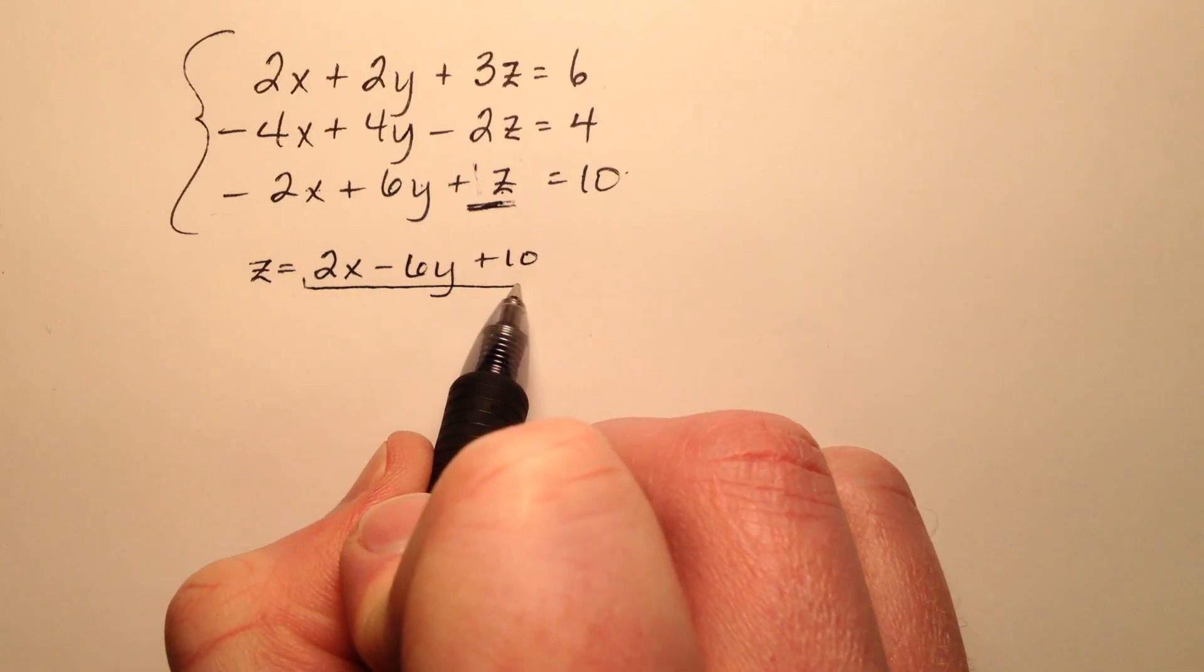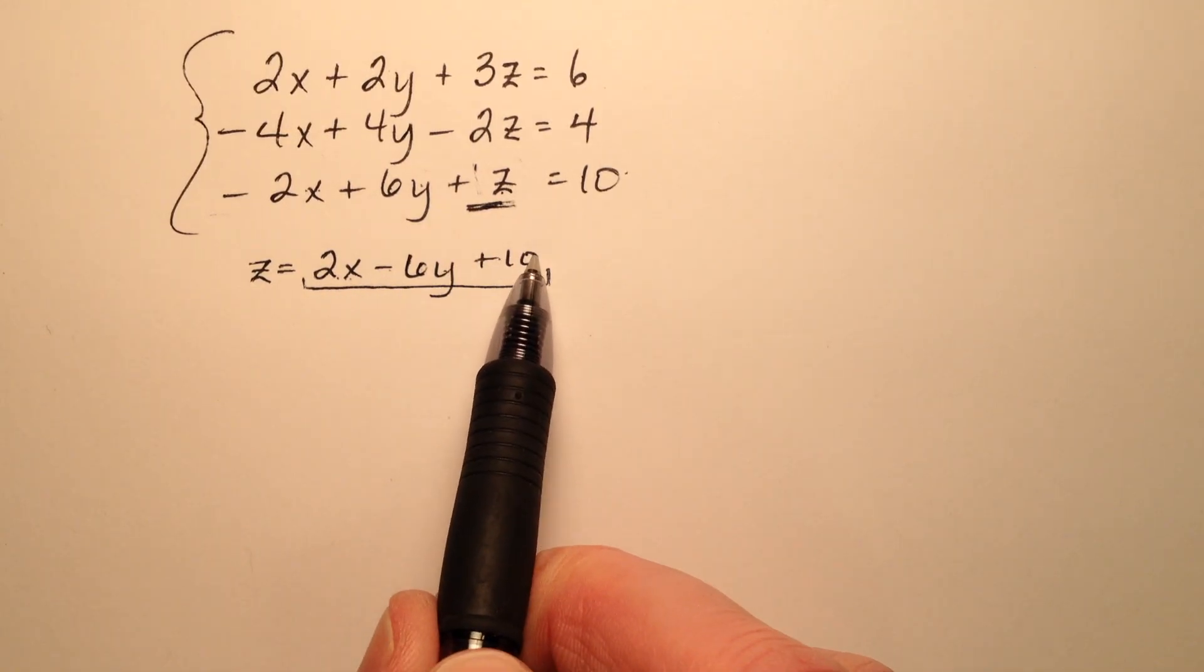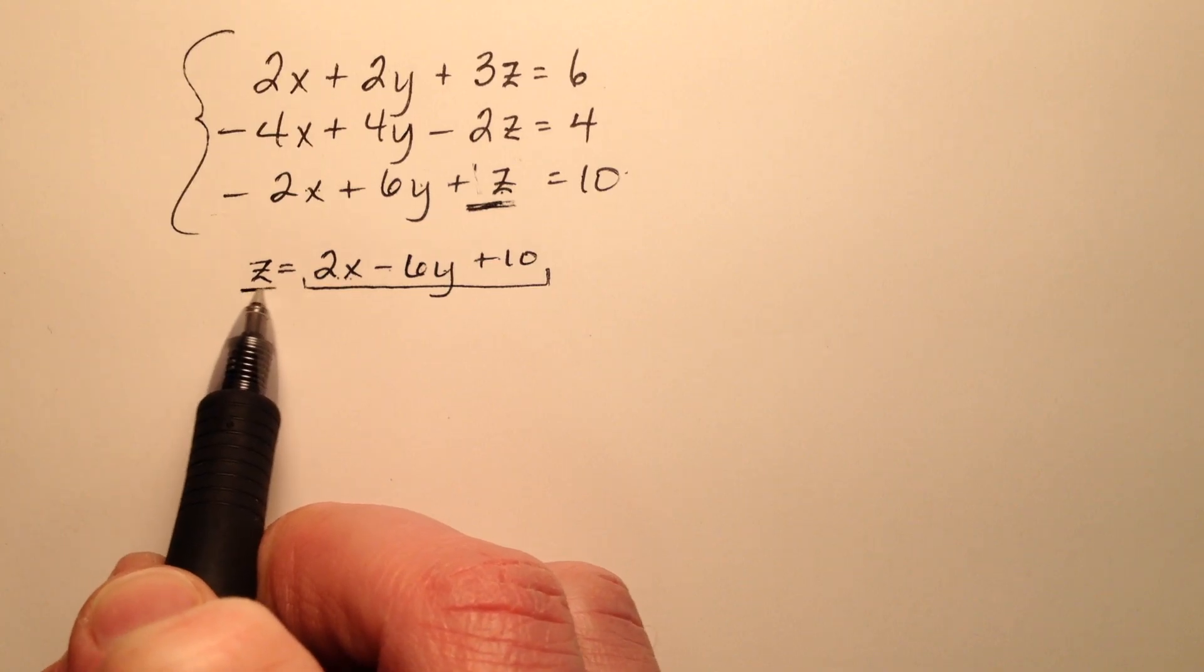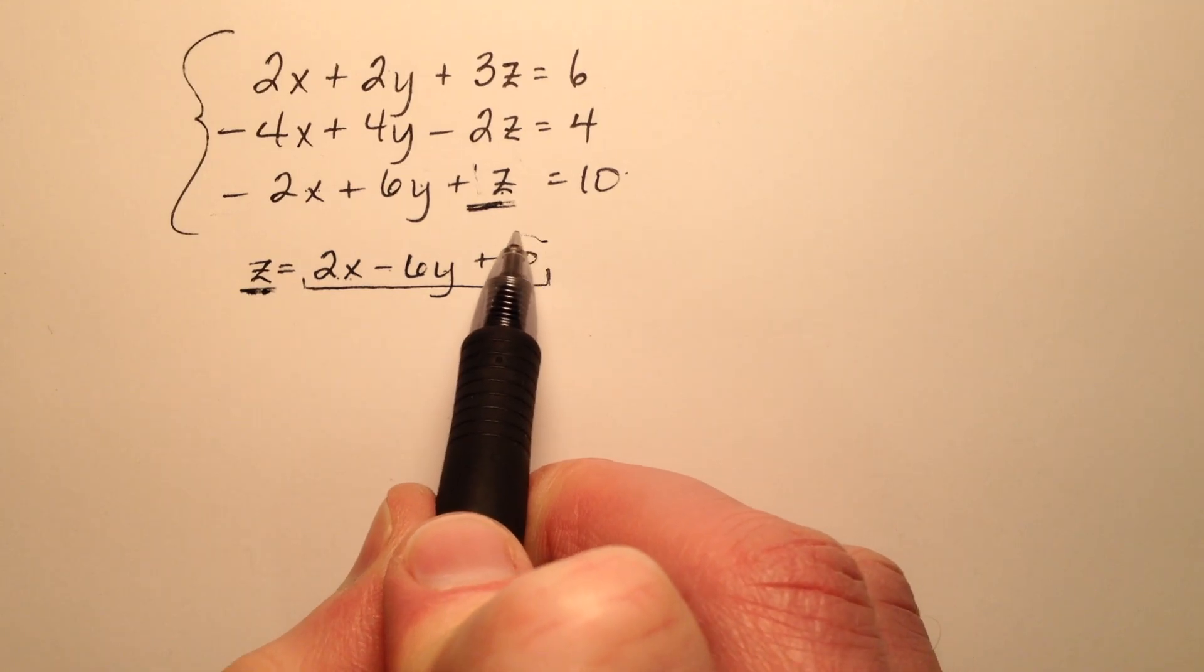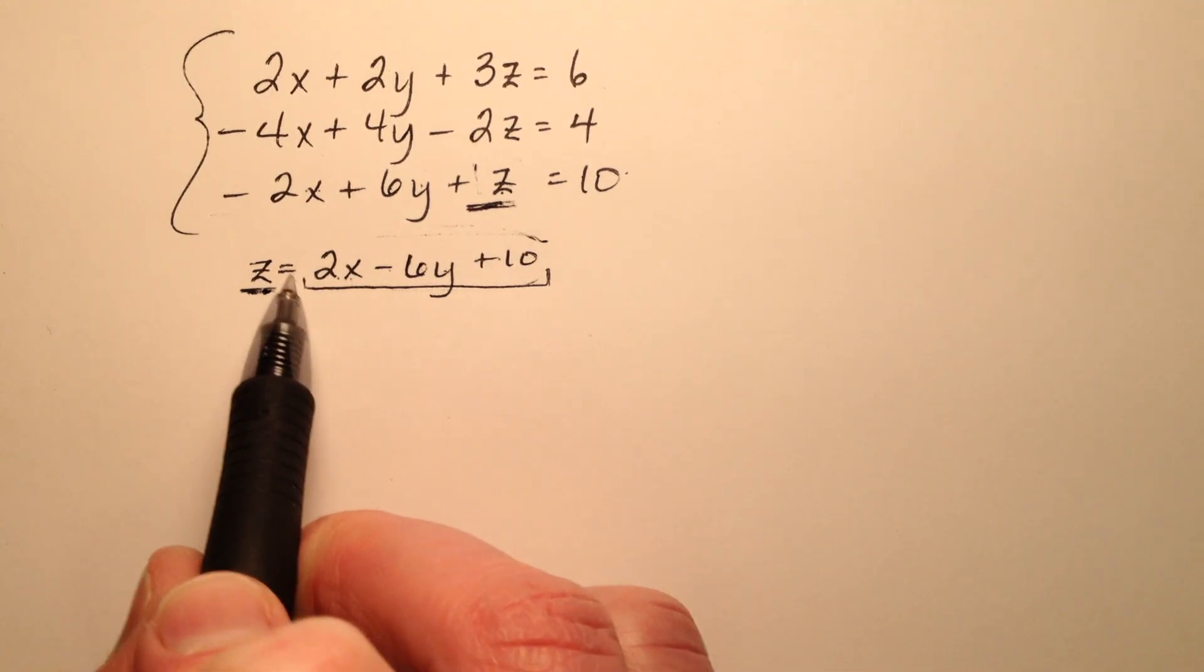So I have this expression now, 2x minus 6y plus 10, and it's going to be equivalent to z. So any time I see a z in any of the other equations, I can substitute this expression instead.